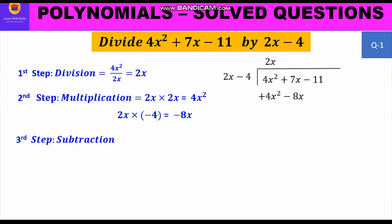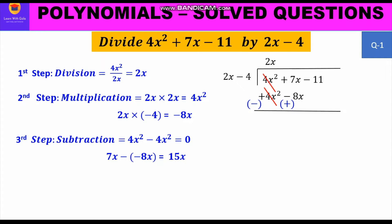Now we move to the third step, subtraction. We change the signs: +4x² becomes −4x² and −8x becomes +8x. Now +4x² and −4x² cancel, and +7x + 8x gives us 15x. We bring down −11, and this becomes the new dividend to solve.